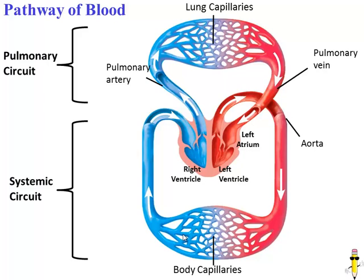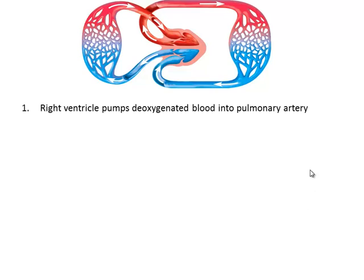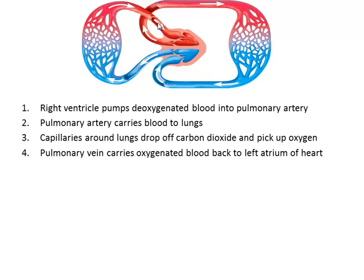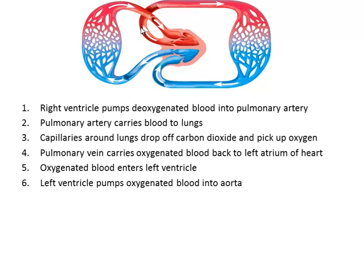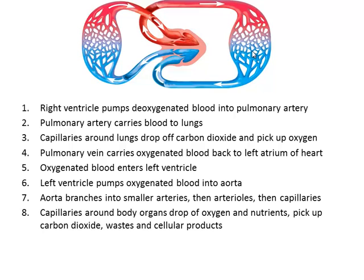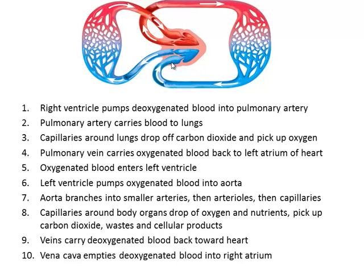The deoxygenated blood travels back through venules, then veins, and finally the vena cava — the biggest vein in the body — which empties the blood back into the right atrium, and then the loop begins again. Here's the summary of main steps: right ventricle → pulmonary artery → lungs (exchange at capillaries) → pulmonary vein → left atrium → left ventricle → aorta → arteries, arterioles, capillaries (materials exchanged) → veins → vena cava → right atrium.